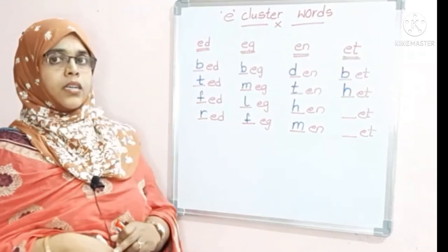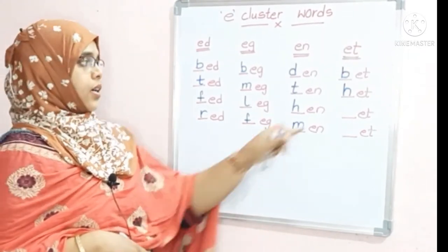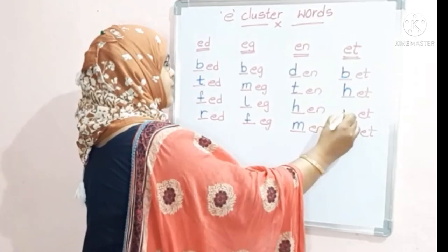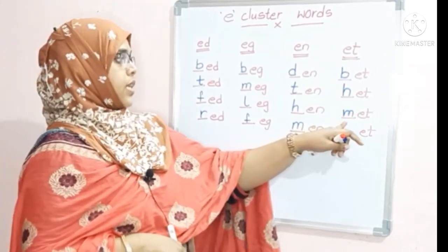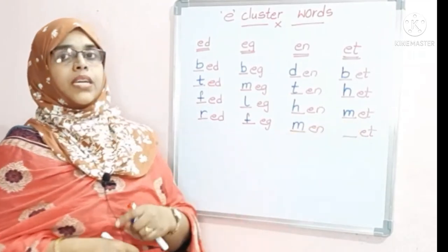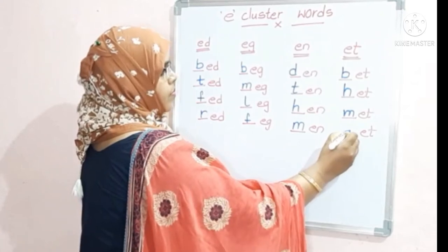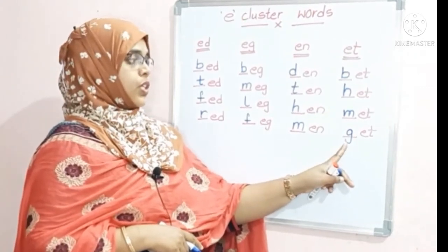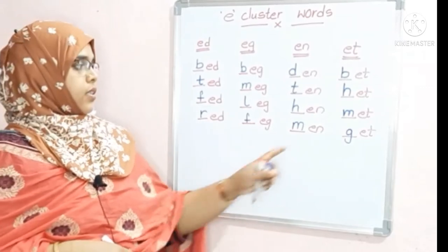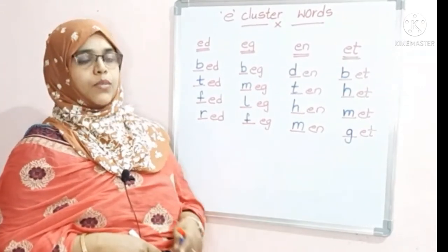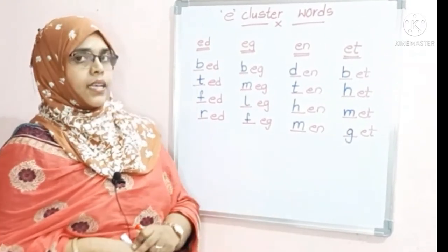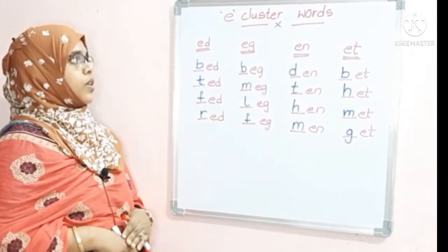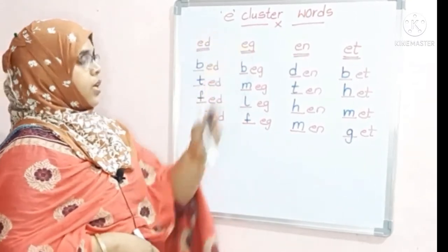Letter H: the sound of H is H — H + ET becomes 'het'. This is letter M — M + ET becomes 'met'. This is letter G, the sound of G is G — G + ET becomes 'get'. So we get the word 'get'. So these are the different words we have formed using E clusters.